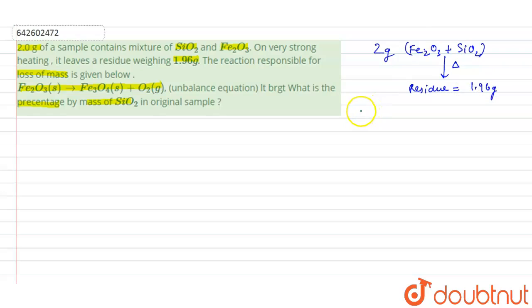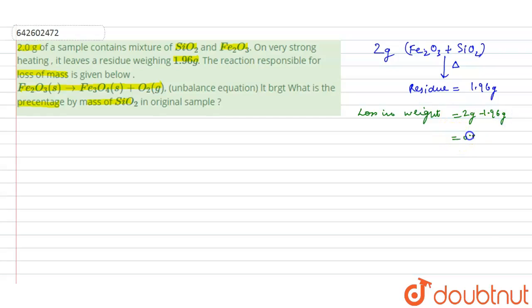We can calculate the loss in weight on heating: 2 grams minus 1.96 grams, which is equal to 0.04 grams. It is given that the loss of mass is responsible due to this reaction.